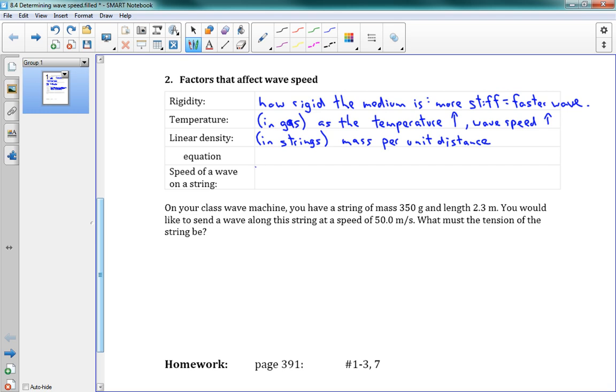linear density is equal to mu, mu equals m over L, where mu is the linear density. Now, remember, we've used mu before. We've used it to talk about friction, and this is just, it's unrelated to friction. It's just a new thing.